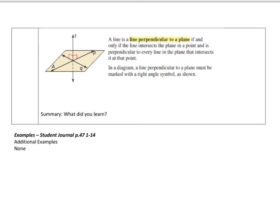This next one says a line is perpendicular to a plane if and only if the line intersects the plane in a point and is perpendicular to every line in the plane that intersects it at that point. If we take a look at this diagram, to get a line perpendicular to a plane, that means any point wherever I move this line—let's use my lightsaber here—if I have this intersecting through the plane,